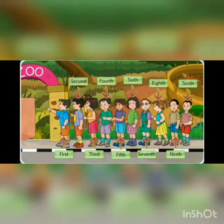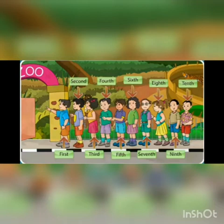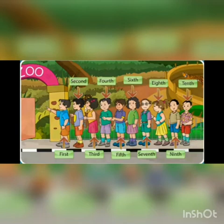Look at the position of the children in the given queue: 1st, 2nd, 3rd, 4th, 5th, 6th, 7th, 8th, 9th, 10th. These numbers are telling us the position of children in the queue, and these numbers are called ordinal numbers.